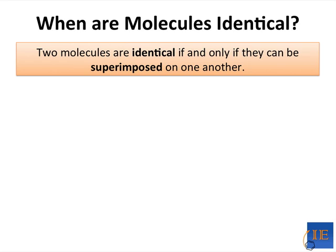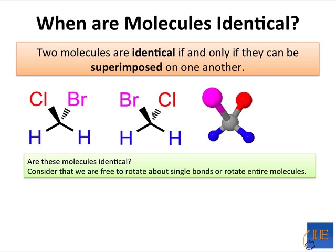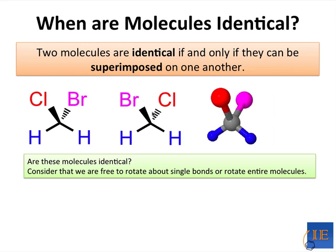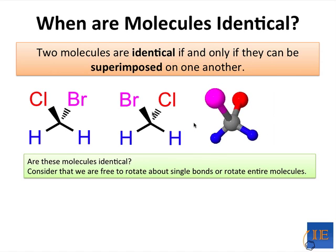What is the criterion for two molecules being identical? Really, there is only one: two molecules are identical if and only if they can be superimposed on one another — that is, we can take the three-dimensional structure of one and perfectly overlay it on the structure of the other. Here are two drawings of molecules you might think are not identical at first glance, because on the left the chlorine is coming out, while on the right it's going back. But if we rotate the molecule on the right, we generate the molecule on the left. So these are just two representations of the same molecule.